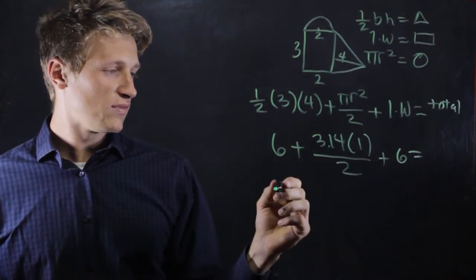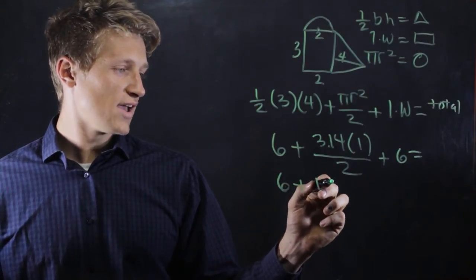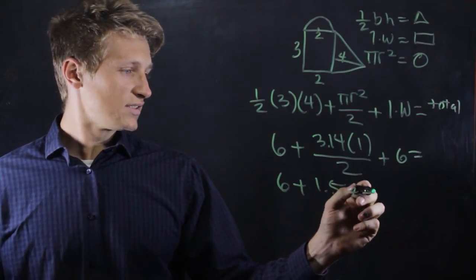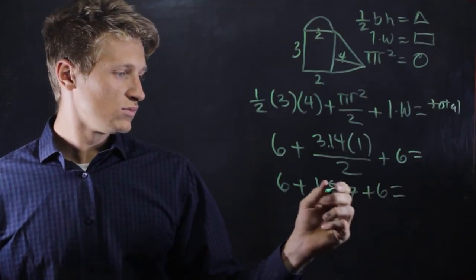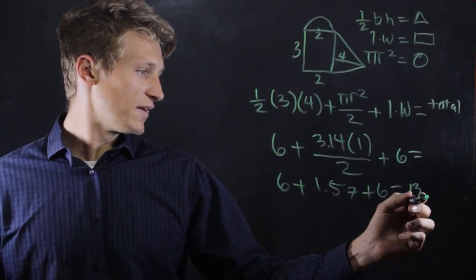Now we just need to simplify this. We'll get 6 plus 1.57 plus 6, and that totals to 13.57.